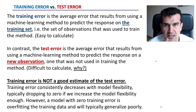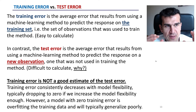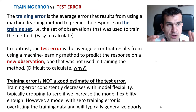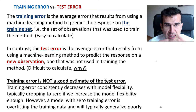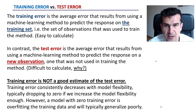What is the training error? Training error is the average error we have when we use a model to predict on the same data set that we used to train that model. That data set is called the training set, and the error we get on average when we use that model to predict on that set is the training error.